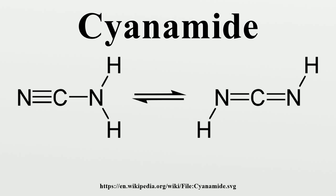Consequently, most commercial cyanamide is sold as an aqueous solution. The main reaction exhibited by cyanamide involves additions of compounds containing an acidic proton. Water, hydrogen sulfide, and hydrogen selenide react with cyanamide to give urea, thiourea, and selenourea, respectively: H2NCN + H2E → H2NC(=NH). In this way, cyanamide behaves as a dehydration agent and thus can induce condensation reactions.